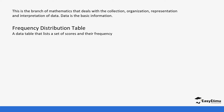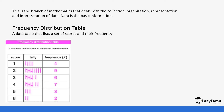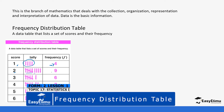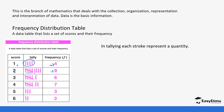We are going to start with a frequency distribution table. The table we have been given has a set of scores and their frequencies — one, two, three, four, five, six — and the tallying is the number of times a value occurs. For example, score one occurred four times, so its frequency is four. Score two occurs nine times: five plus four gives us nine. In tallying, each stroke represents the quantity, and frequency is the number of times an item or value occurs.